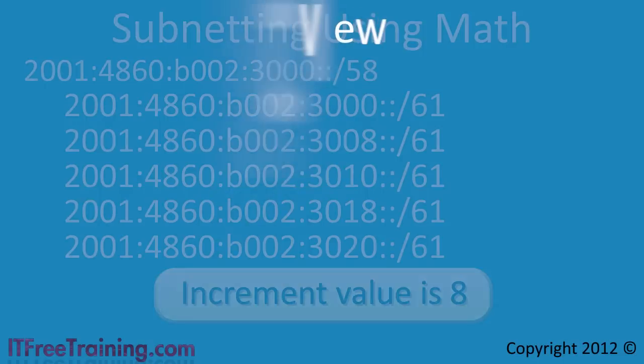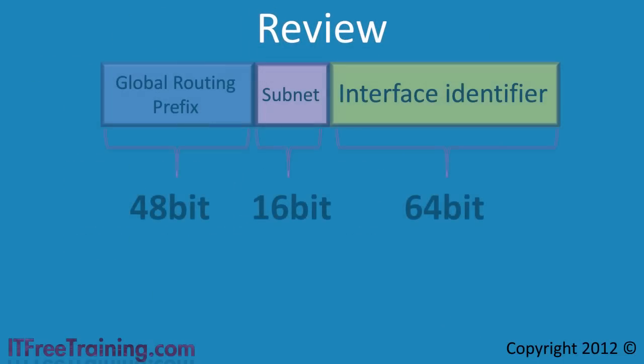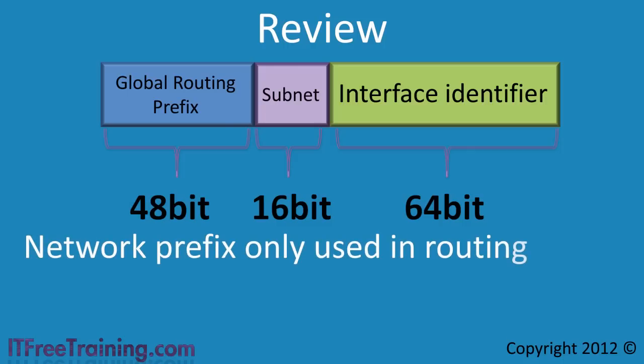I personally think that the process is easier than working with subnet masks in IPv4 since the global IPv6 dedicates 16 bits used for routing and subnetting. Remember that the network prefix is only used for routing and thus on the local network,